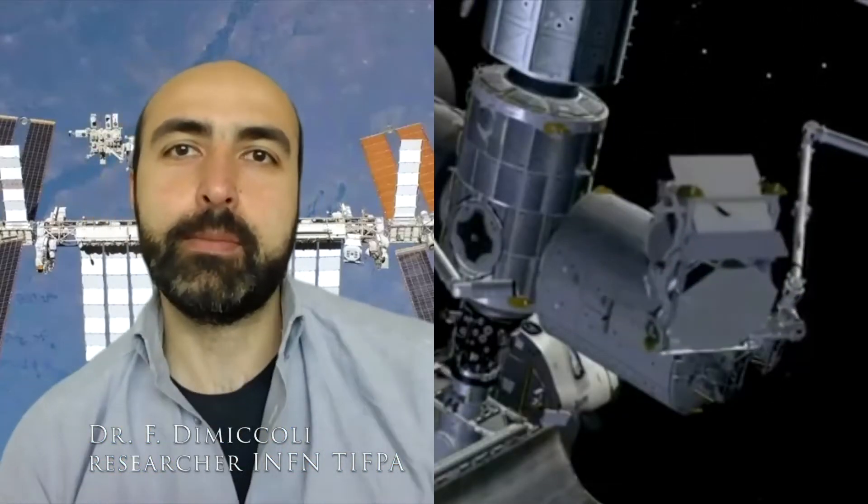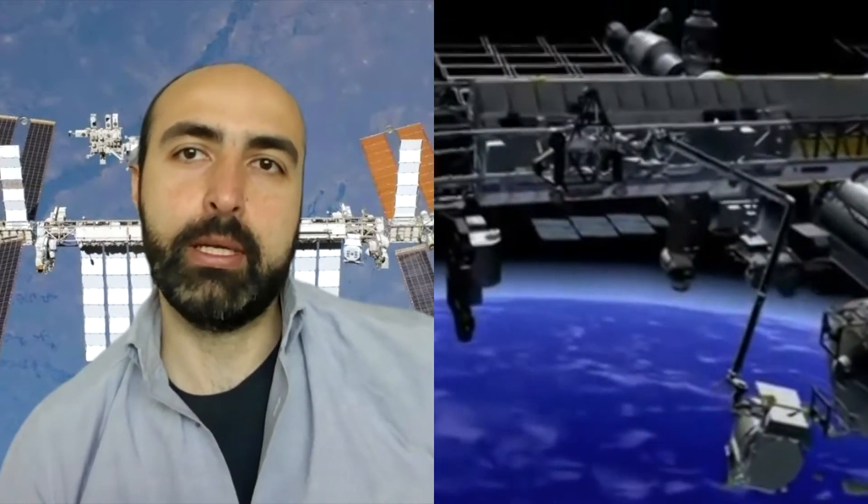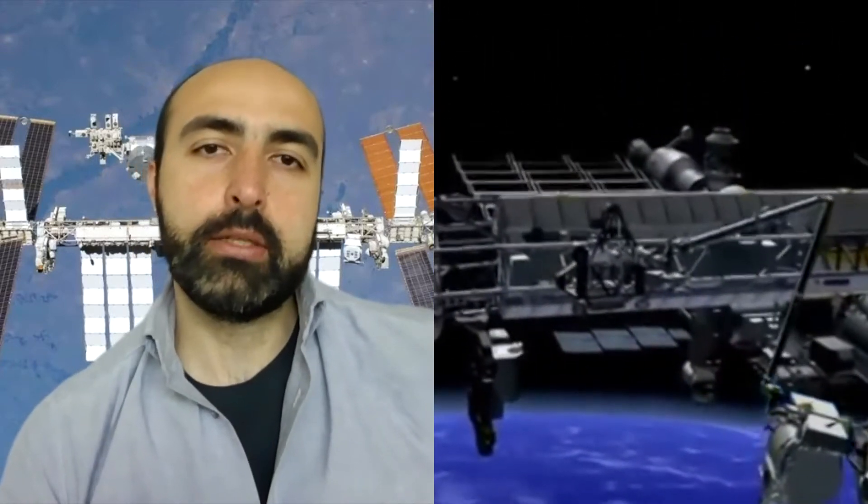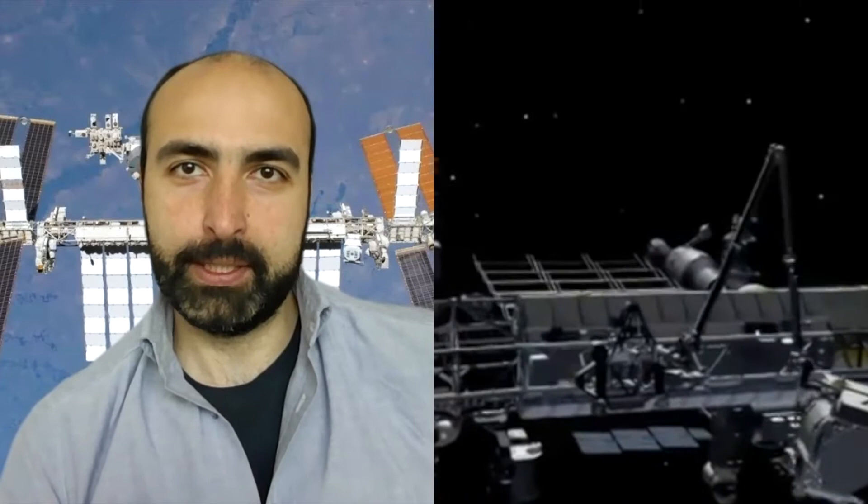The AMS experiment is a particle detector, similar to those you would find at CERN in Switzerland and Fermilab in USA, but it is located in the International Space Station, and since 2011 constantly orbits around us with a period of about 90 minutes.